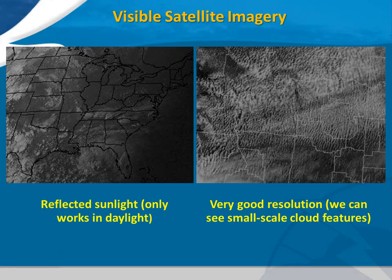In the picture on the right, we see what meteorologists refer to as cloud streets over northeastern Montana. The typical resolution of visible imagery that meteorologists use is one kilometer or just over half a mile. This means cloud features that we see in visible satellite imagery are generally at least half a mile wide.